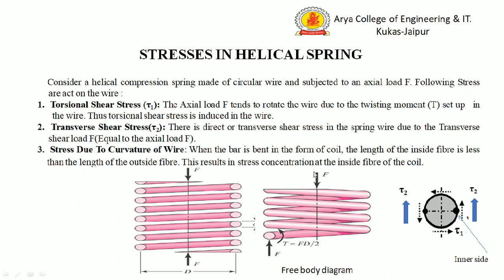This is the first effect of the axial force F. Also, to balance this force F, an equal and opposite force F is produced at the wire section. This force F is basically a tangential force for this section and it produces a transverse shear stress Tau 2, as shown in this diagram. So torsional shear stress Tau 1 and transverse shear stress Tau 2 are the major stresses in the spring wire. Third is the stress due to the curvature of the wire.